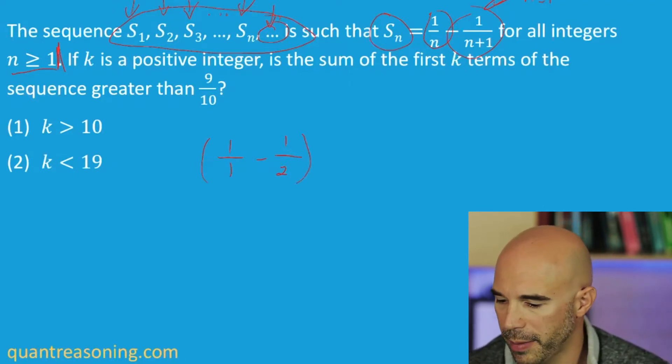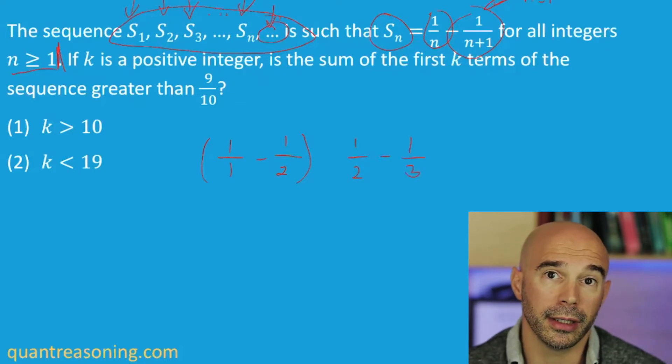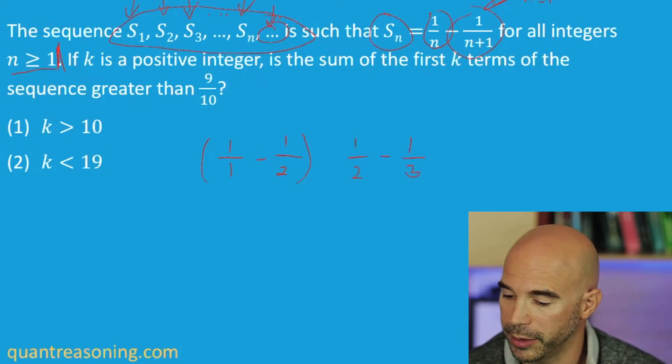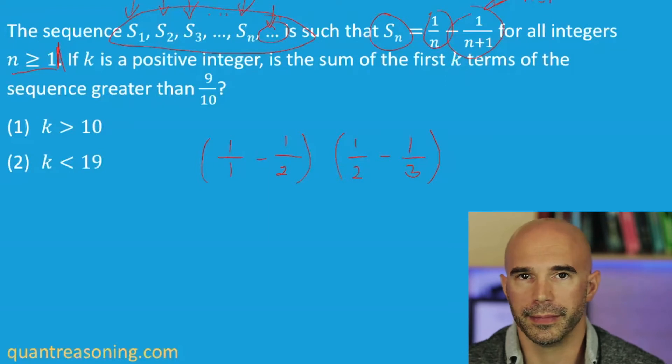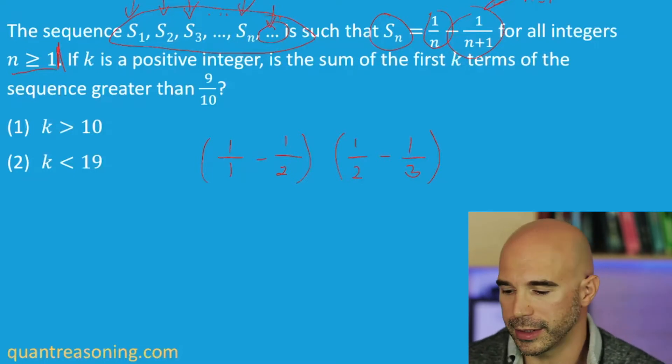And I would probably also figure out the second term, just to help me wrap my head around what's going on here. So the second term would be one over two minus one over three. Again, I'm just plugging in n equals two into that same expression. And I'm kind of seeing a pattern here. The next term, I don't need to write it down. I would just say that it's one third minus a quarter, and then a quarter minus one fifth, and then one fifth minus one sixth, et cetera.